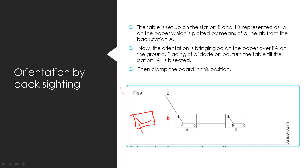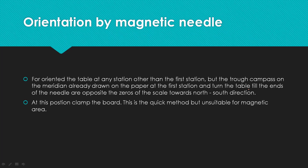If the point is fixed, we will locate the table. Overall, we have points A, B, C, D — four points. We can see A to D and A to B, and also B to C. Orientation by magnetic needle uses the trough compass. The magnetic needle check is used for back sighting to fix the orientation.